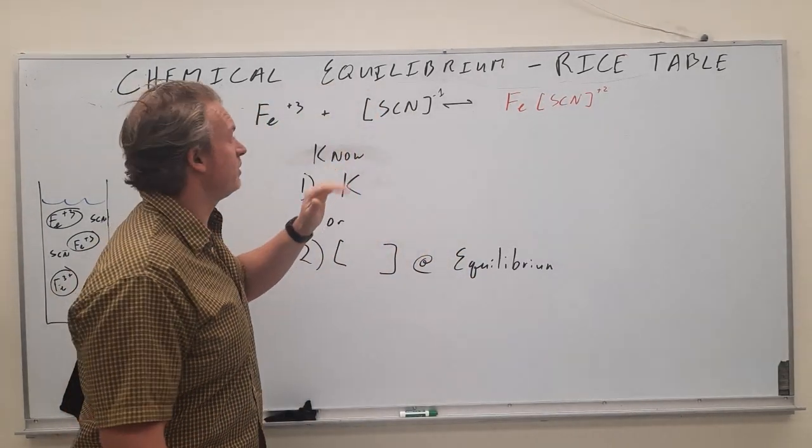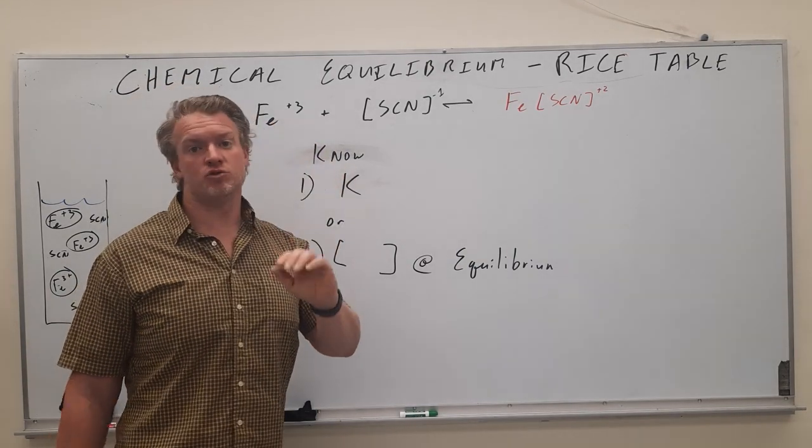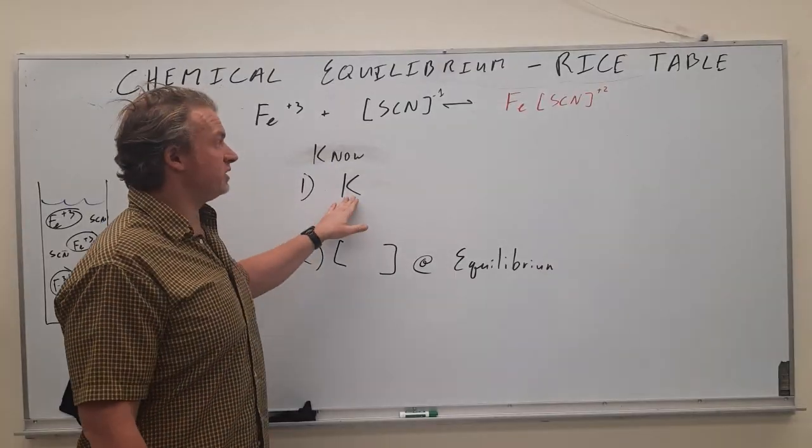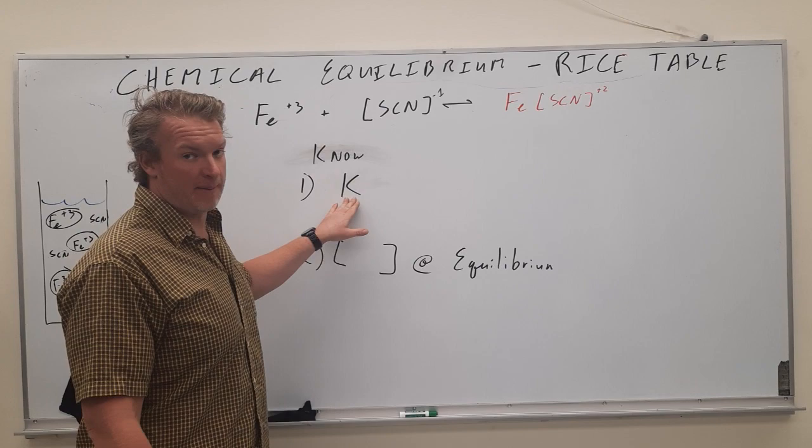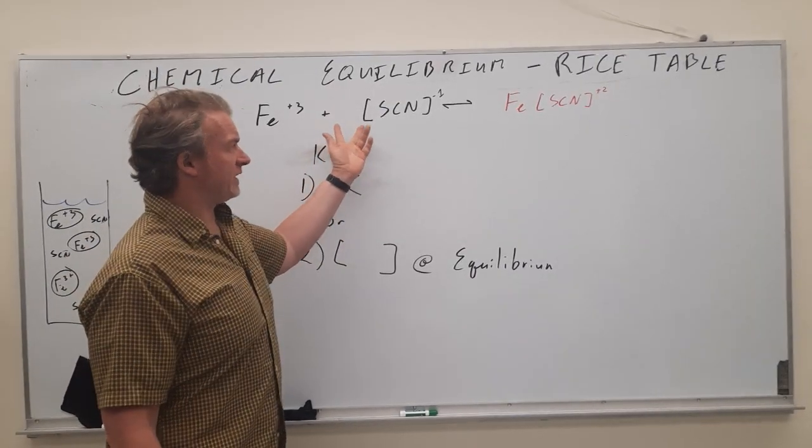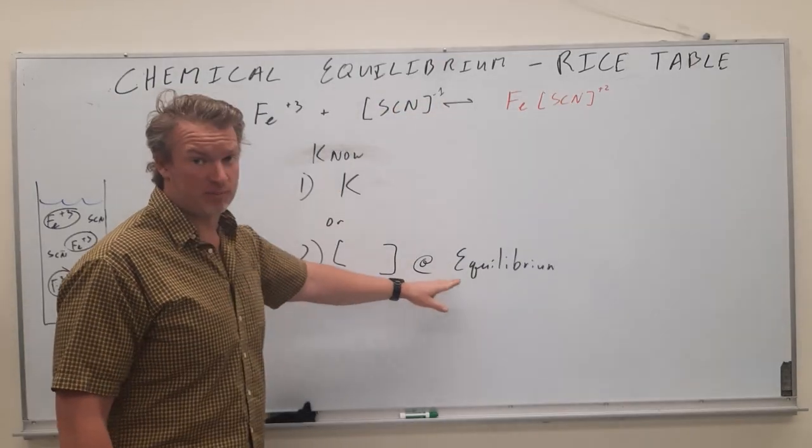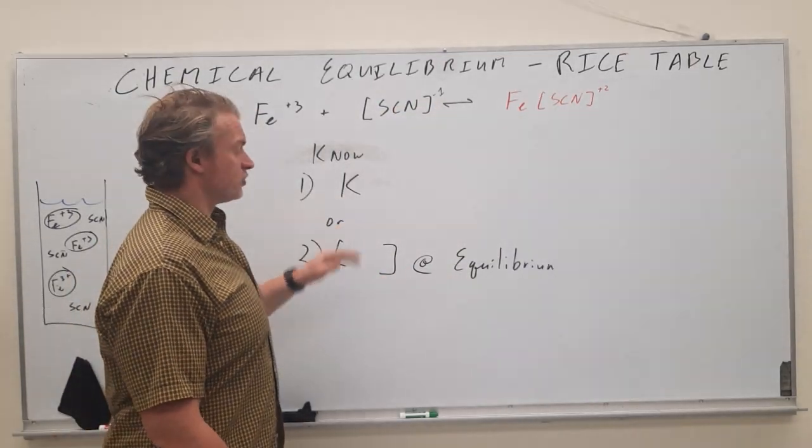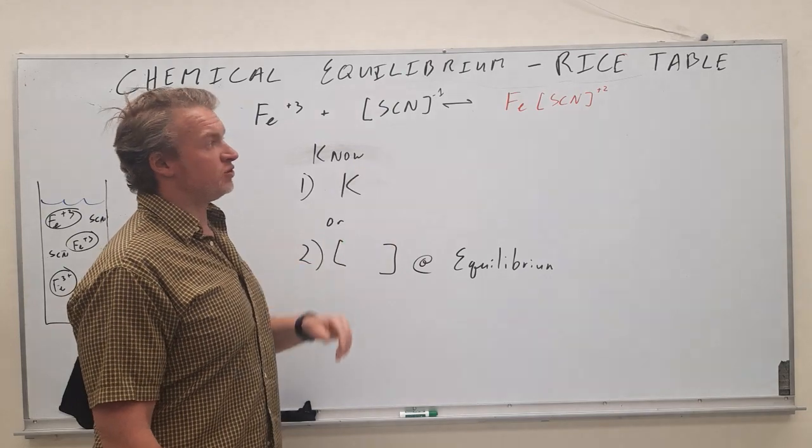Just very simply, chemical equilibrium, when to use a RICE table. If you need to know the value of capital K, or if you want to know the molarities of reactants and products at equilibrium, those are two instances you would be using a RICE table.